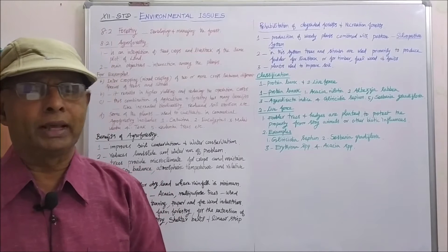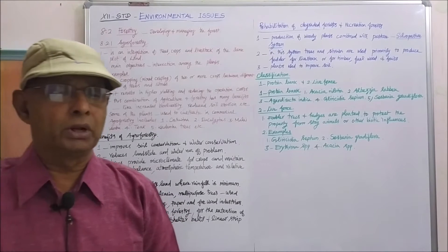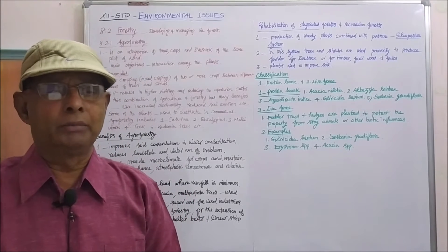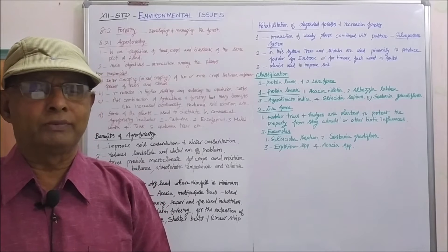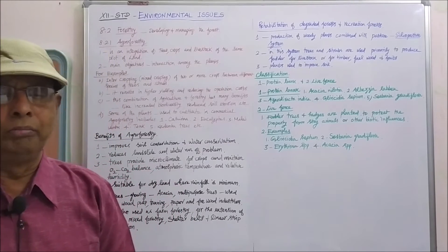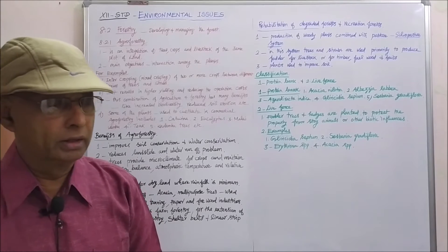number 4, teak plant; number 5, kadambu trees, etc., which are identified as commercial timber among the 20 species of trees. They are very important to wood-based industries.